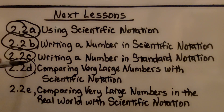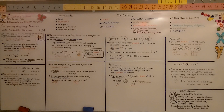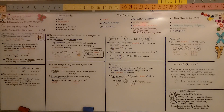We've finished part D and we're moving on to part E, the last part: comparing very large numbers in the real world with scientific notation. One more time — when comparing numbers written in scientific notation, always compare their powers of 10 first; if they're the same, compare their multiplicands. I hope you join me for the last part. Have a great day, see you next time!